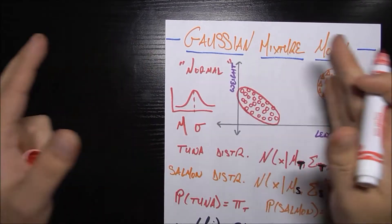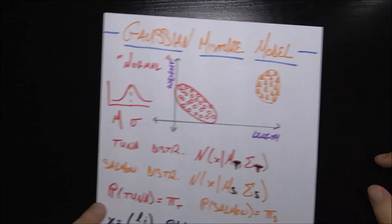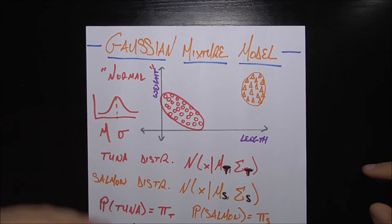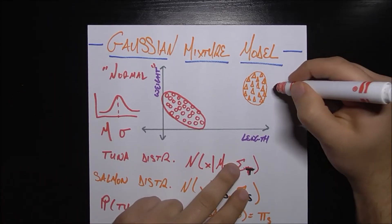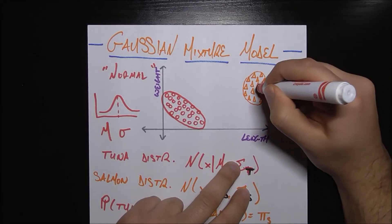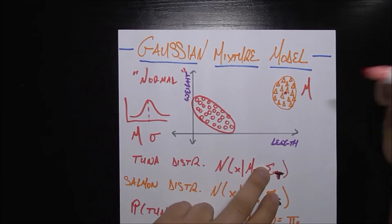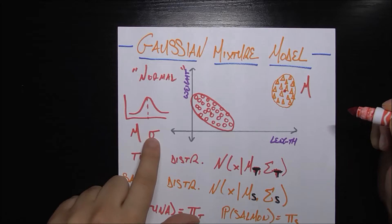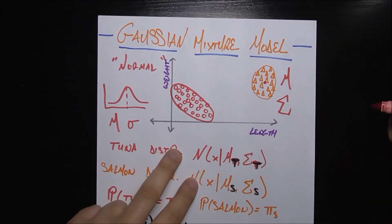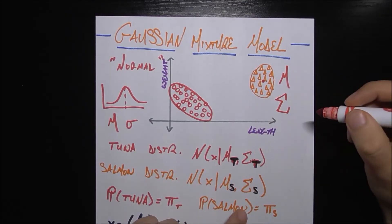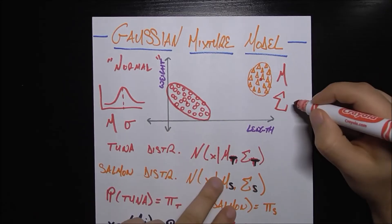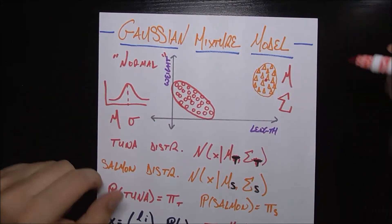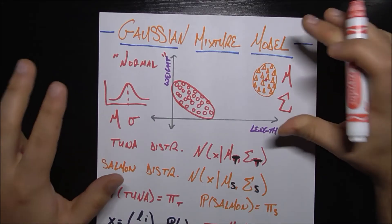A high sigma means it's very spread out; a low sigma means it's pretty compact. When we have higher dimensions — you'd probably want to study the multivariate normal distribution before going through this — it's the same form. We have a mu vector, here a two-dimensional vector. The mu for salmon is probably around the middle of that cluster, and the mu for tuna is probably around the middle of that one. Instead of scalar sigma, we have a covariance matrix capital sigma, a two-by-two matrix, which basically tells us the shape of that oval — whether it's more circular, more oval, tilted or not.